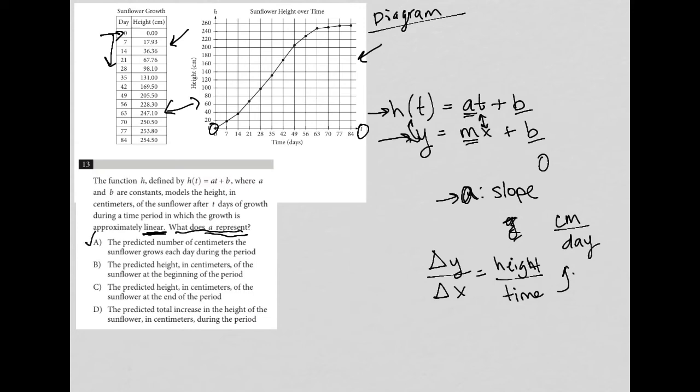So choice B says the predicted height in centimeters of the sunflower at the beginning of the period. Well, no, that's not the case. Actually, that's b. At the beginning of the period, b represents, or your y-intercept will represent the predicted height, so B is out.